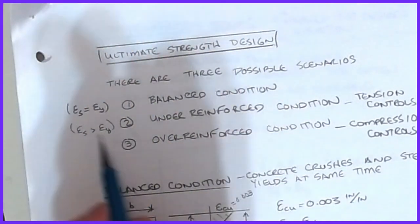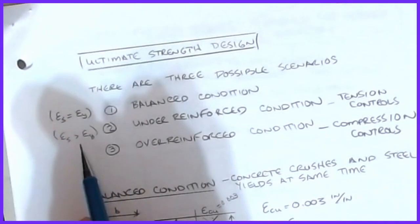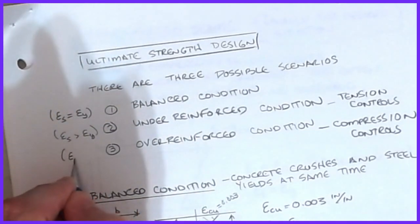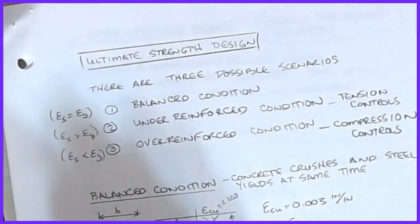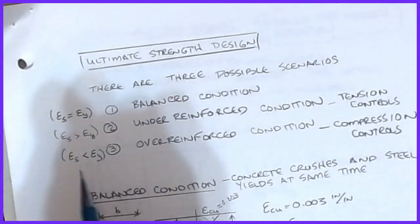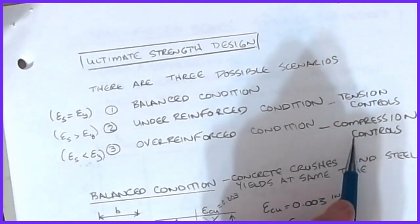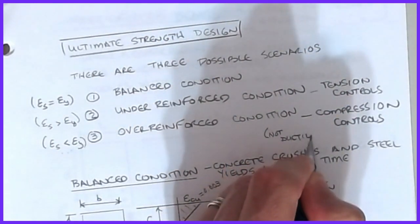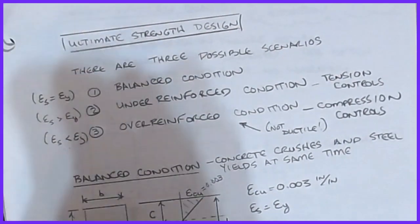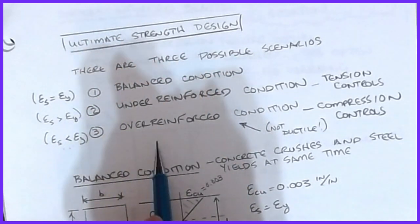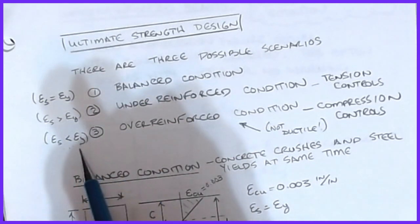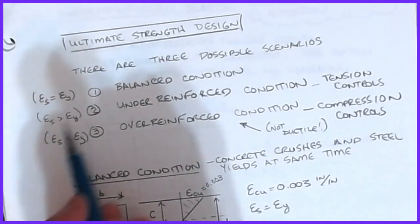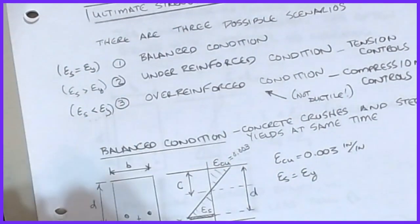The under-reinforced section is the case where epsilon_s is greater than epsilon_y — this is what we call a tension-controls scenario. We're well past yielding in the steel, and it's reasonably ductile behavior. There's also the case where epsilon_s is less than epsilon_y. Those are the three possible outcomes for any given strain diagram. That third case is the over-reinforced condition, which almost always leads to a compression-controls scenario — the concrete crushes before the steel yields. This is not ductile.